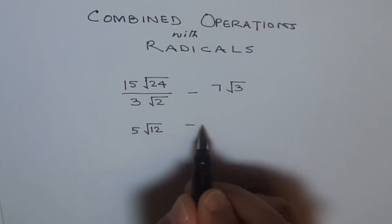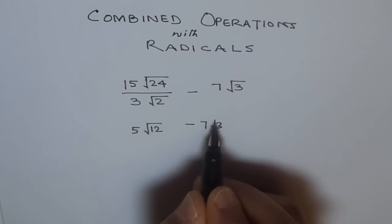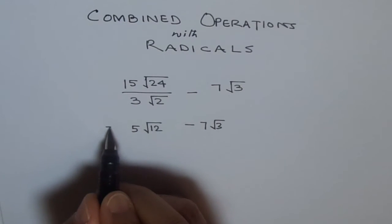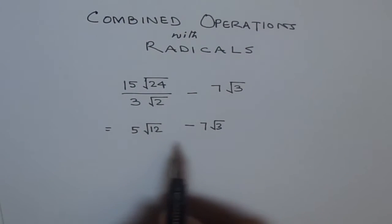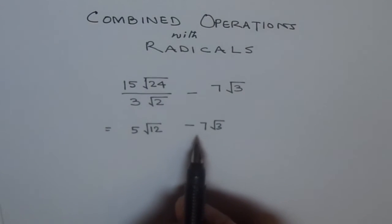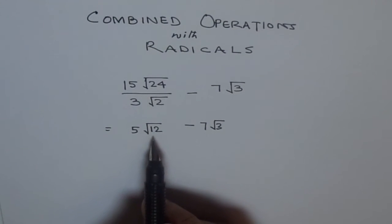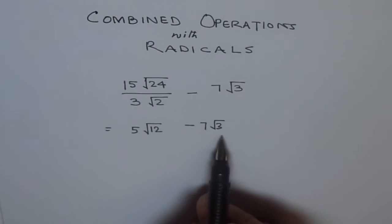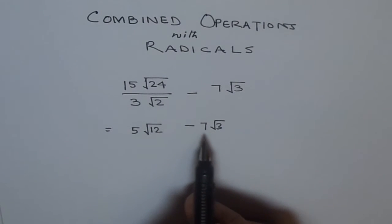Now here we have 7 radical 3. Now you cannot do 5 minus 7 and radical 12 minus radical 3. Many students do that kind of mistake. You can only combine these two when you have like radicals.